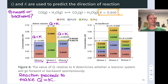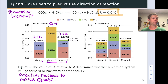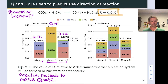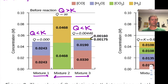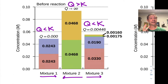Q and K can be compared to tell us whether a reaction goes forward or backward. Here we have another example: the reaction of carbon monoxide, CO, with H₂O gas to form CO₂ and H₂ gas. The value of K is 0.640, boxed in orange. We're looking at three different reaction mixtures — mixture 1, 2, and 3 — with the concentrations of each species listed.